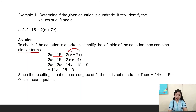Simplifying: 2x² - 2x² = 0, so the x² terms cancel. The result is -14x - 15 = 0. The equation has a degree of 1, so it is not quadratic. Thus, -14x - 15 = 0 is a linear equation.